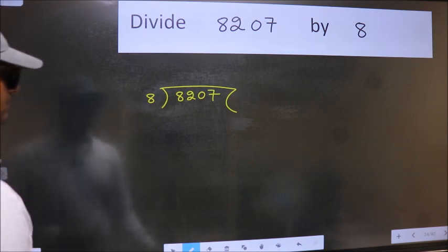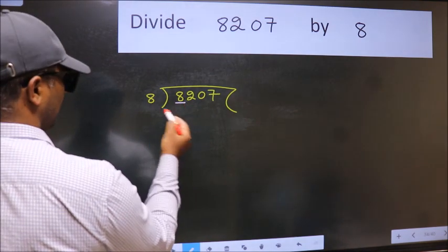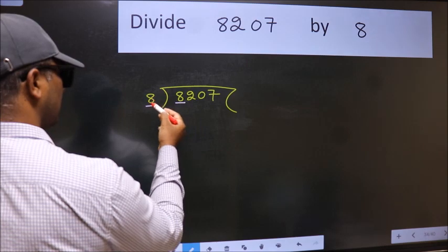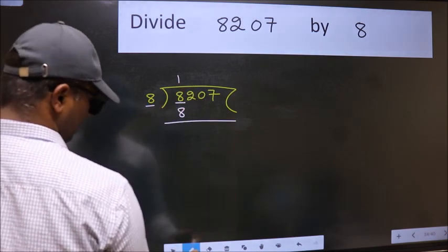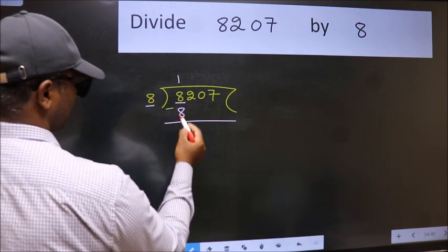Next. Here we have 8 and here 8. When do we get 8 in 8 table? 8 once 8. Now, we should subtract. We get 0.